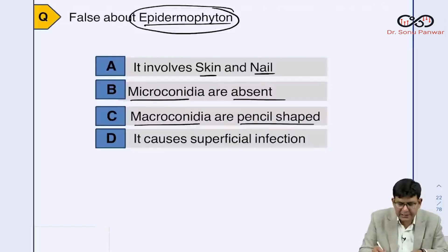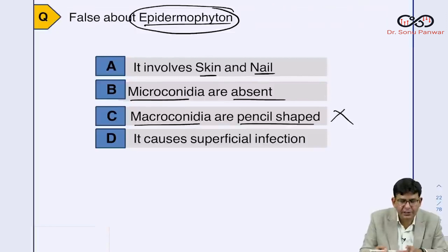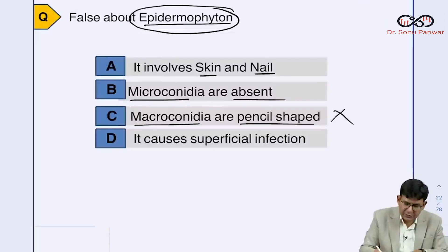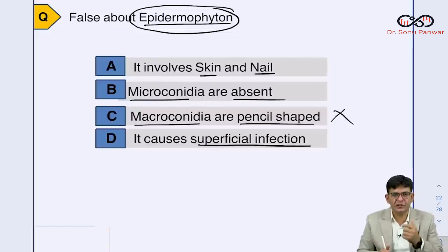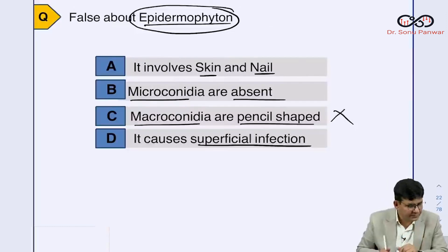Option: it involves skin and nail. That is true — they do involve skin and nails. Another option: microconidia are absent in it. Yes, microconidia are absent in this particular one.